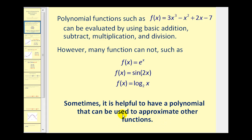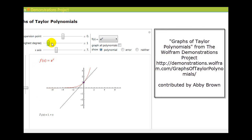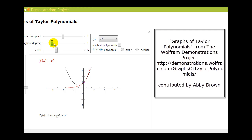Let's take a look at an animation to see how this will work. Here we have the function f of x equals e to the x, and we have a tangent line at x equals zero. A tangent line is a linear approximation to a function at a given point, so this would be a degree one polynomial approximation to f of x equals e to the x. Watch what happens as we increase the degree of this polynomial approximation. You can see as the degree increases, it becomes a better and better approximation to the actual function in red.